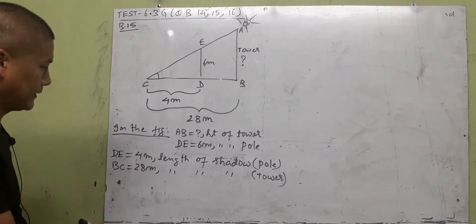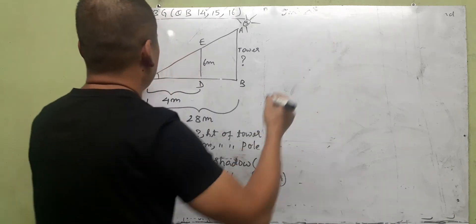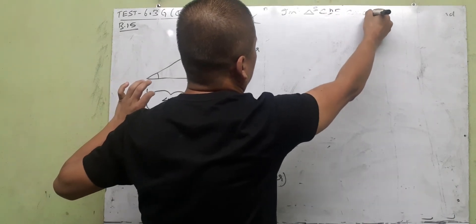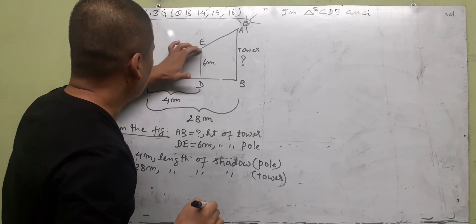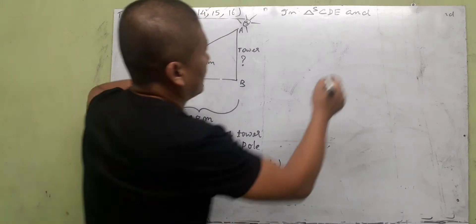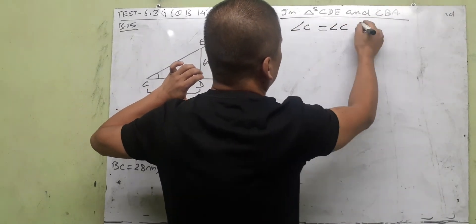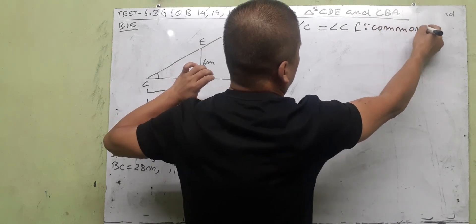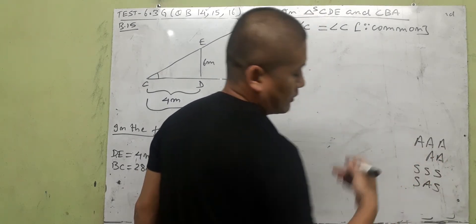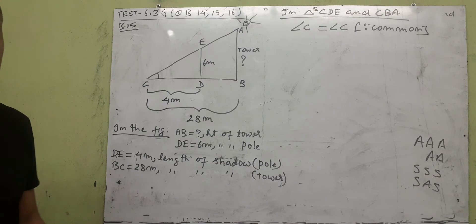We have to find the height of the tower, which is AB. In the figure: AB is unknown — height of tower; DE is 6 meters — height of the pole; CD is 4 meters — shadow of the pole; BC is 28 meters — shadow of the tower. Now, in triangles CDE and CBA, we need to prove similarity to find the height.